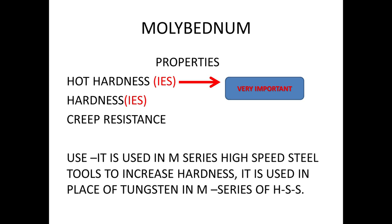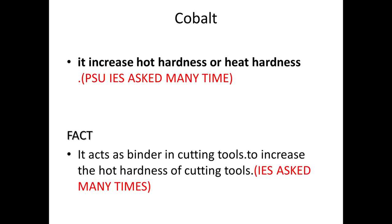Next is molybdenum. Molybdenum provides toughness, hardness, and creep strength, but toughness and hardness are the primary properties — and among these, hardness is the main property provided by molybdenum. We know that the M-series of high-speed steel tools employ molybdenum as a major alloying element, which provides hardness or hot hardness to the tool.